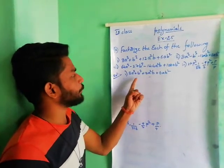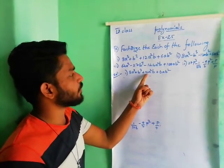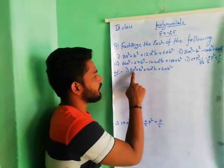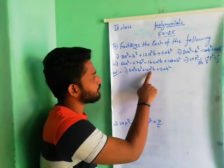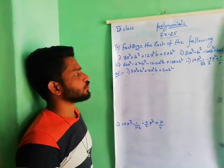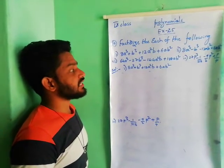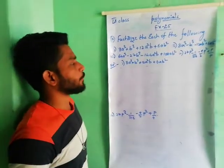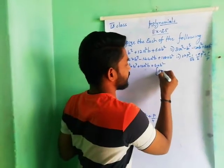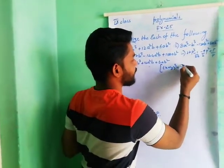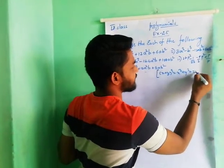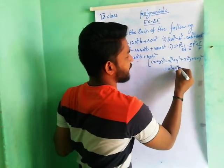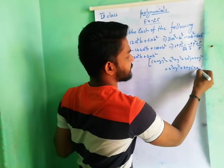The first expression is 8a cube plus b cube plus 12a square b plus 6ab square. We observe that there is an a cube term, b cube term, a square b term, and ab square term. So the format a cube plus b cube plus 3a square b plus 3ab square is suitable. We know that (x + y) whole cube equals x cube plus y cube plus 3x square y plus 3xy square, or x cube plus y cube plus 3xy into (x + y).